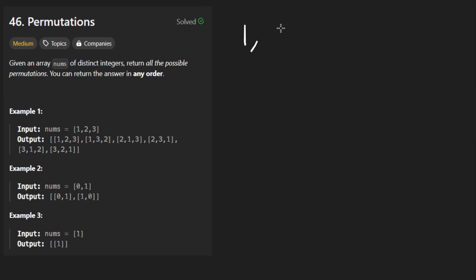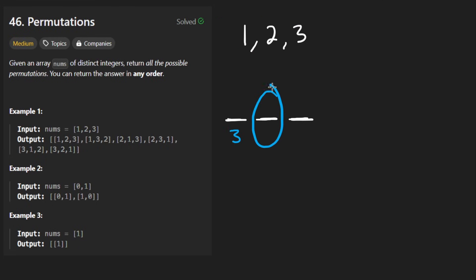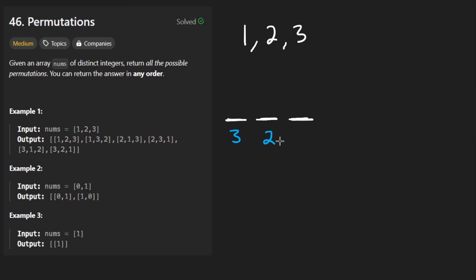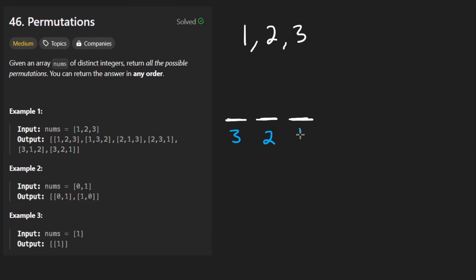A permutation of a set of numbers would look something like this. We have three numbers, so we're going to have three positions to fill. For the first position, we have three choices — we can pick any of the three elements. For the second position, we'll have only two elements remaining to choose from. And then after we've picked the first two elements, the last one is already decided. So three times two times one — we'll have six different permutations of this set of numbers.